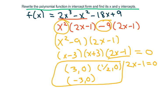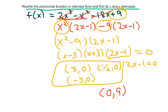The y-intercept is found by plugging in 0 for x. All the x terms drop out and you get 9, so the y-intercept is (0, 9). Thanks and have a nice day!